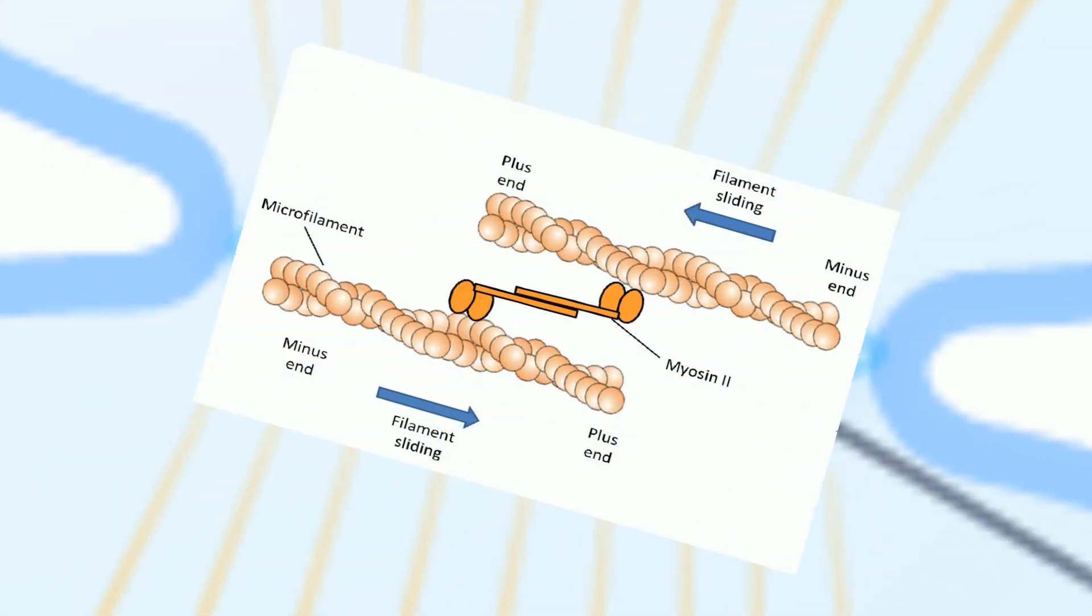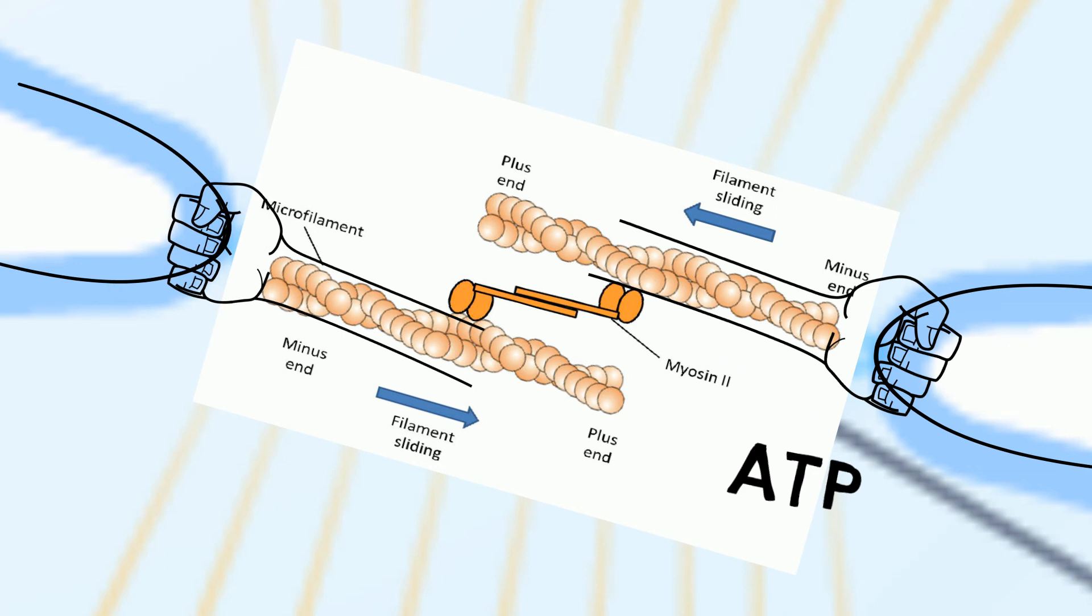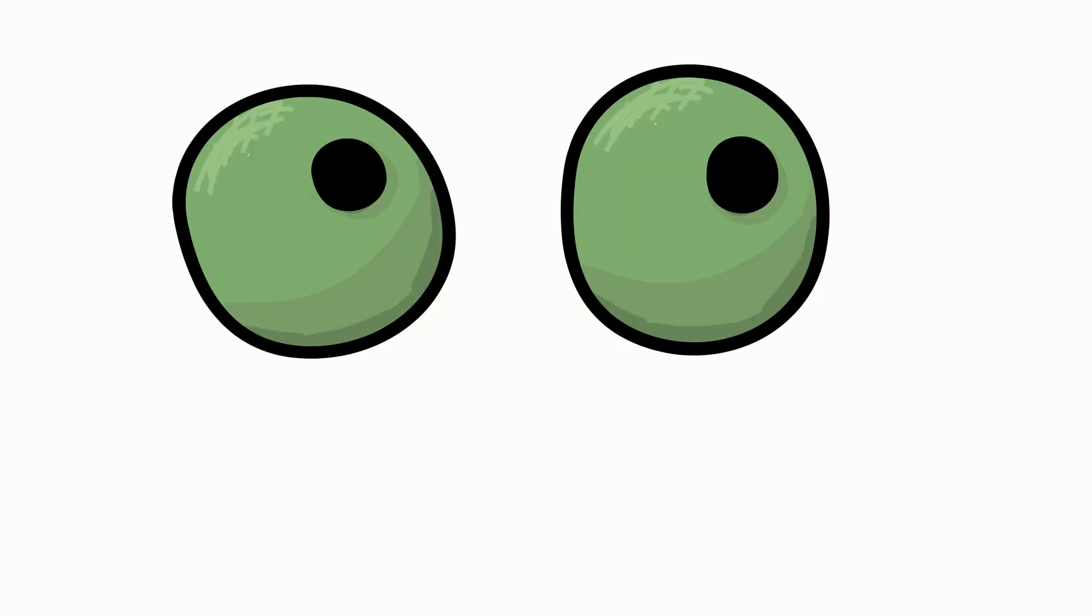Contraction of the ring is produced by sliding the actin filaments relative to one another using ATP. This pulls the plasma membrane progressively inward, thereby constricting the center of the cell and pinching it into two.